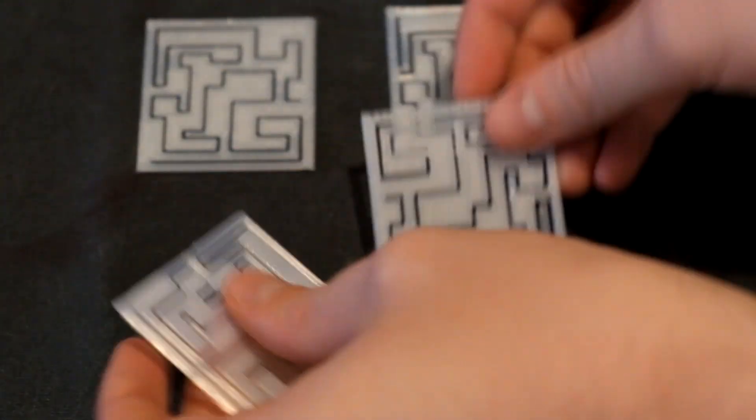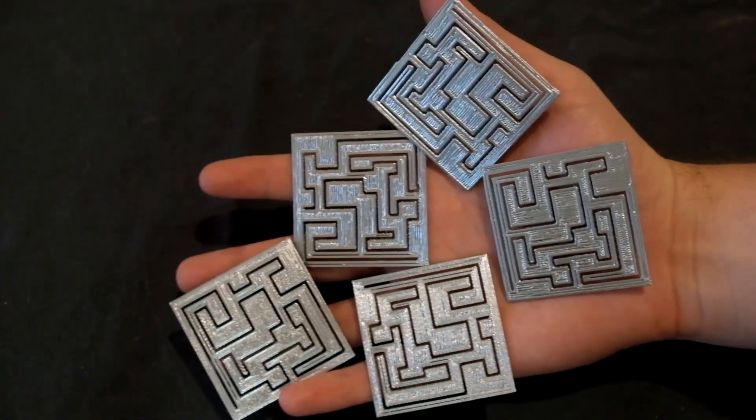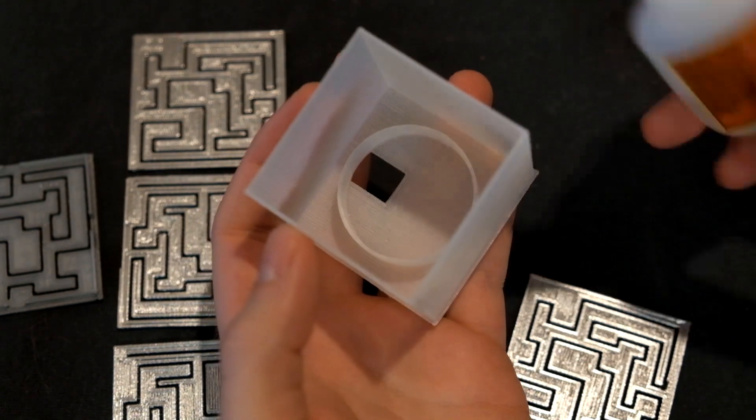I printed this in white PLA and used a metallic chrome to spray paint the 4 sides and the lid. Once the paint dried, I used super glue to help hold the side panels to the main base.